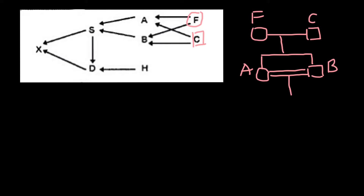The mating of A and B resulted in child S, and S would be male. Individual S would be inbred, and would contribute 50% of its genetic makeup to individual D, while parent H would also contribute 50% to child D. So let's put H here — it has to be female.